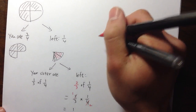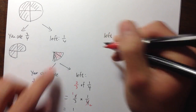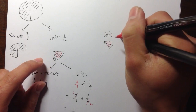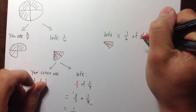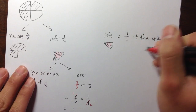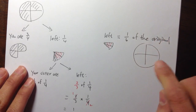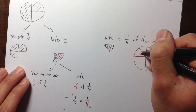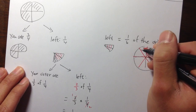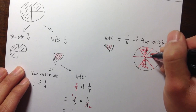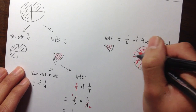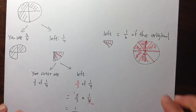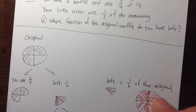So the piece you have left is equal to one sixth of the original. Let me draw a nice picture. This is the amount that was left — it is one sixth of the original waffle. If we divide the waffle into six pieces, we can count: one, two, three, four, five, six. And this remaining piece is exactly one sixth. We are going to use this approach to help us do question number 12 in a minute.